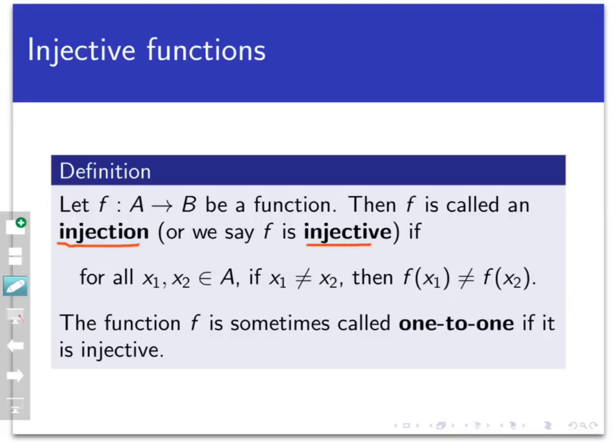for every x1 and x2 in the domain, if x1 and x2 are not equal, then f of x1 and f of x2 are not equal. Now why does this definition encode the notion of an injective function not having any collisions? Well, what it says is that if f is injective, that whenever we take two different points in the domain, they must map to two different points in the codomain. In other words, we never have two different points in the domain mapping to the same point. So therefore we have no collisions. And sometimes we call an injective function one to one.